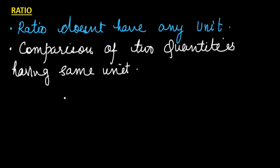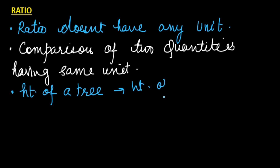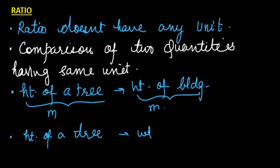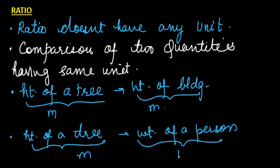What does that mean? It means that we can compare the height of a tree with the height of a building — both of these will be in the same unit, maybe meters. However, it doesn't make sense to compare the height of a tree to the weight of a person, because these two quantities are in different units — one in meters, the other in kilograms.